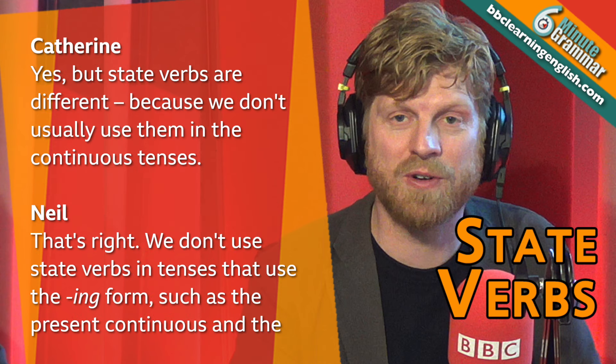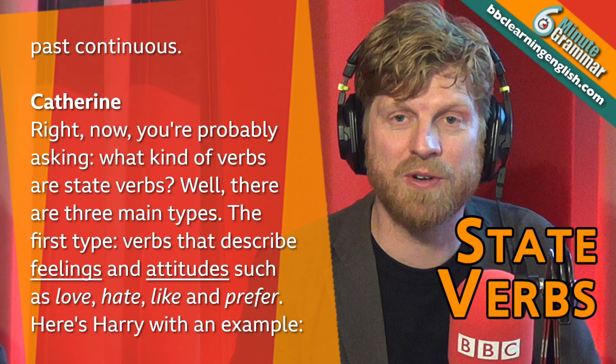But state verbs are different because we don't usually use them in the continuous tenses. We don't use state verbs in tenses that use the –ing form, such as the present continuous and the past continuous. Now, you're probably asking what kind of verbs are state verbs. Well, there are three main types. The first type – verbs that describe feelings and attitudes, such as love, hate, like and prefer.